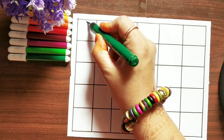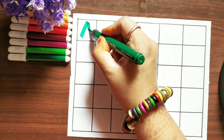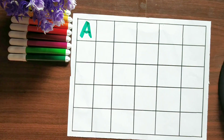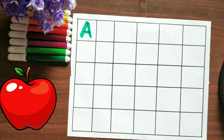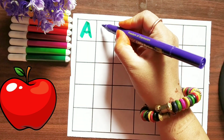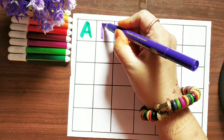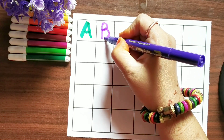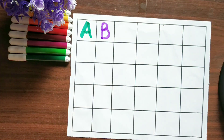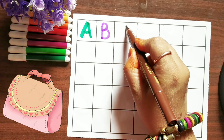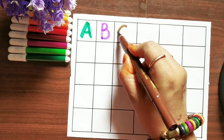Green color. A, A for apple. Purple color. B, B for big.